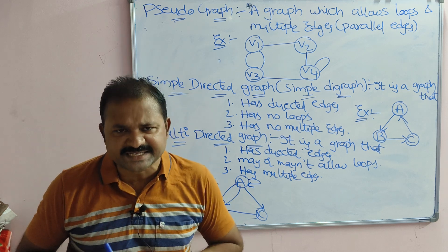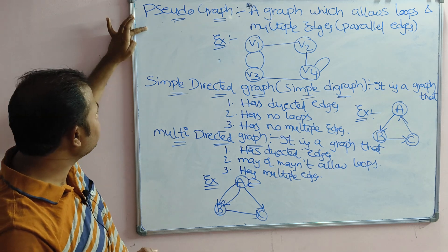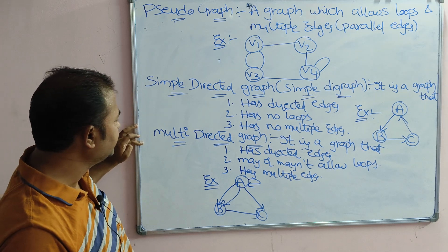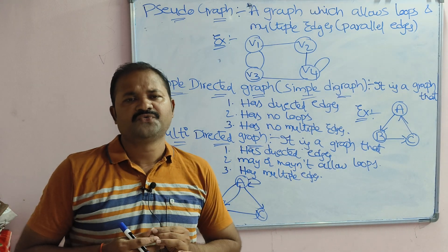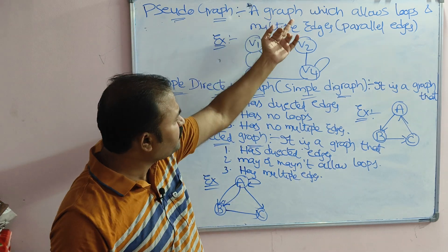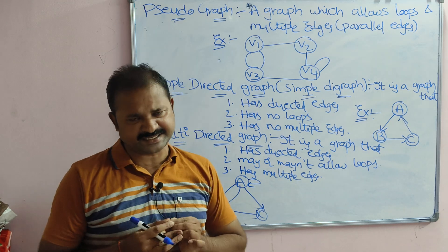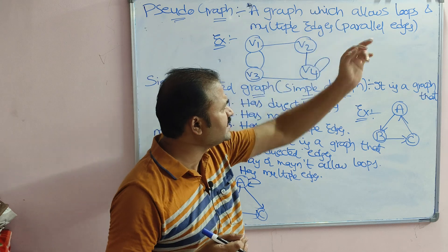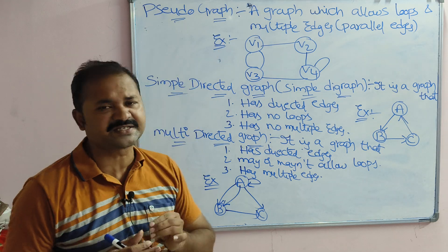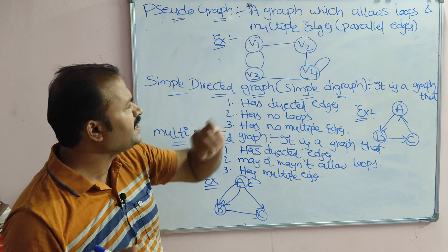Let us discuss three graph terminologies: pseudograph, simple directed graph, and multi directed graph. First, let's see what a pseudograph is. A pseudograph is a graph which allows loops and multiple edges — we can call multiple edges as parallel edges also. The definition is very simple: it allows loops as well as multiple edges.